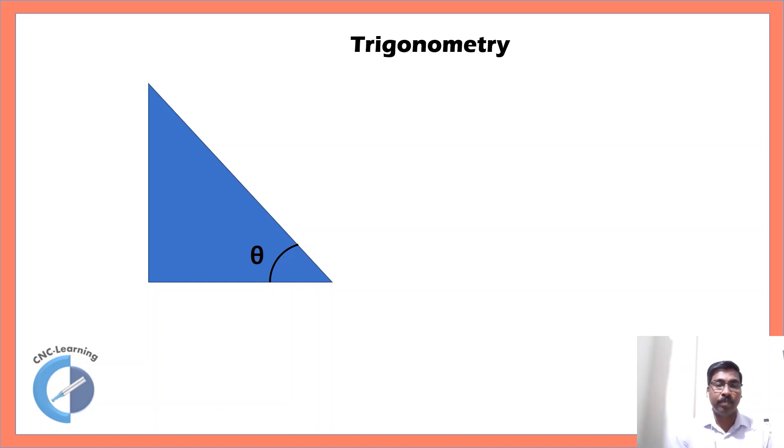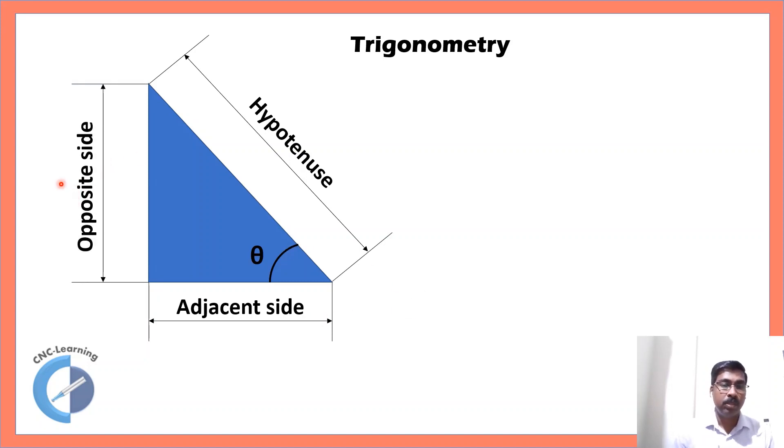Next one is trigonometry. So, you have one angle and the longest side, here again it is right angle triangle, this angle is 90 degree. The longest side is called hypotenuse and the other side which is adjacent to the angle. This is also adjacent, but this being the longest side is called hypotenuse. The other side which is adjacent to this angle. Now, here we are considering this angle.